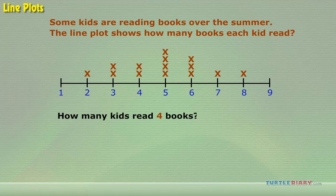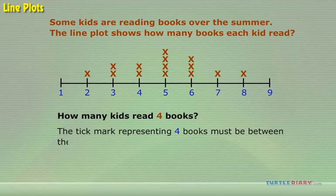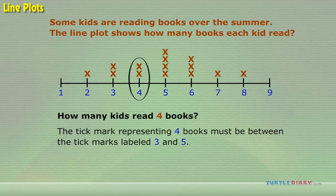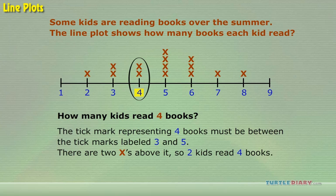How many kids read 4 books? The tick mark representing 4 books must be between the tick marks labeled 3 and 5. There are two crosses above it, so 2 kids read 4 books.